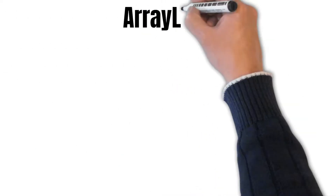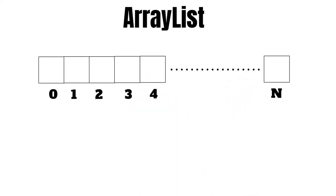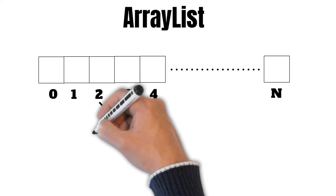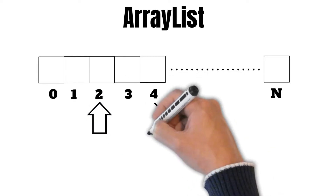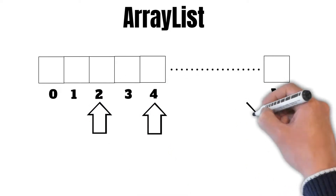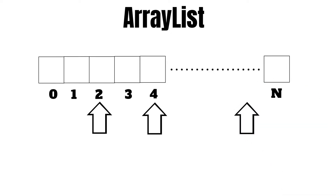An ArrayList is a numbered data structure. Since it's a numbered data structure, random access based on any index value is very convenient in ArrayList. Suppose you want to access the value at index 2, index 4, or any random index — it is very convenient with ArrayList. So whenever we need random access, ArrayList should be our data structure of choice.